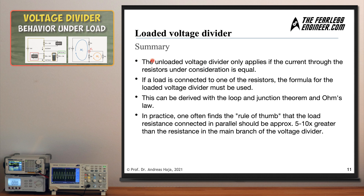Let's summarize the major takeaways. The unloaded voltage divider formula only applies if the current through both resistors is equal. If a load is connected to one of the resistors, the loaded voltage divider formula must be used, which we derived using Kirchhoff's loop equations, the junction equation, and Ohm's law. As a rule of thumb in practice, the load resistance connected in parallel should be approximately 5 to 10 times the size of the resistance in the main branch of the voltage divider.